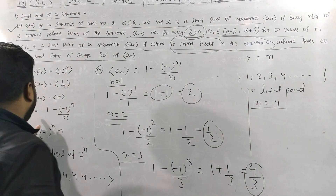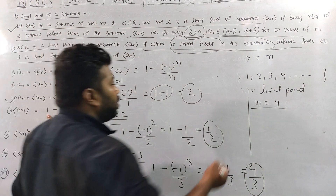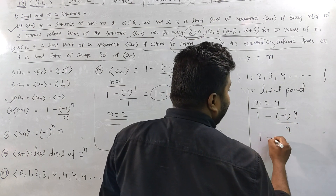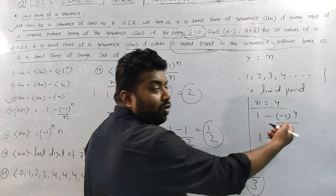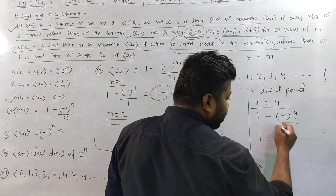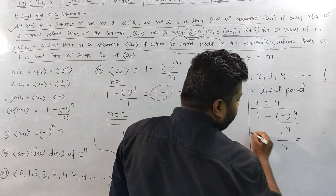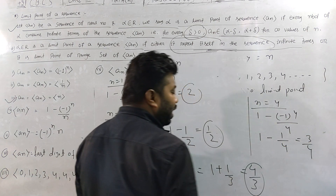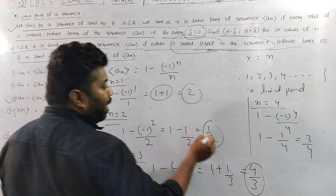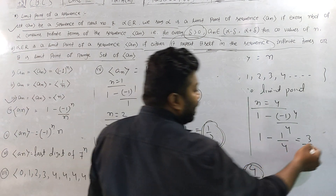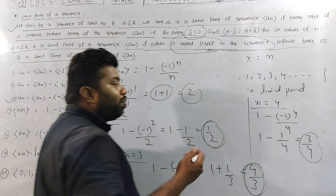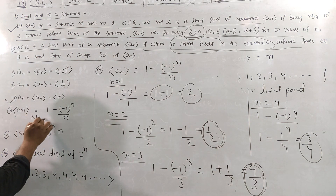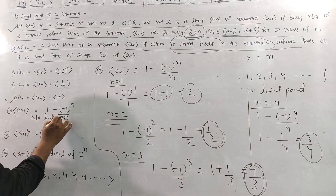For n = 4: 1 minus ((-1)^4)/4 = 1 minus 1/4 = 3/4. So we get values 2, 1/2, 4/3, 3/4 — all distinct numbers. Since all values are distinct, there is no limit point.